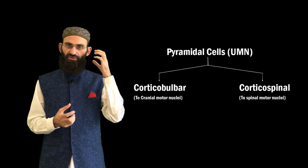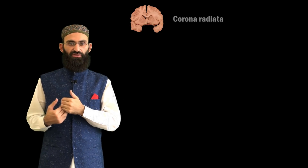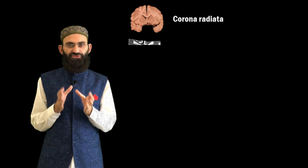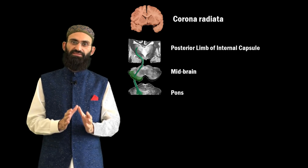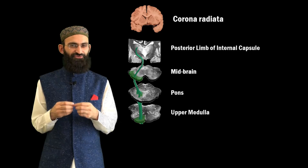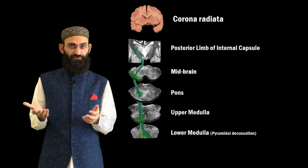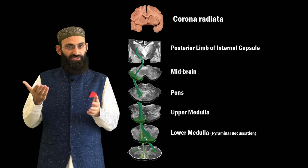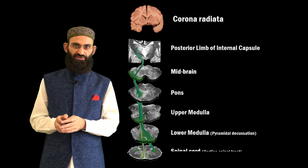In the corticospinal tract, pyramidal cells send their axons from the cerebral cortex to the spinal cord through the corona radiata, posterior limb of the internal capsule, cerebral peduncle, midbrain, pons, and medulla. These fibers then take a sharp turn at the level of the lower medulla, cross the midline to the other side, and descend in the spinal cord as the lateral corticospinal tract.